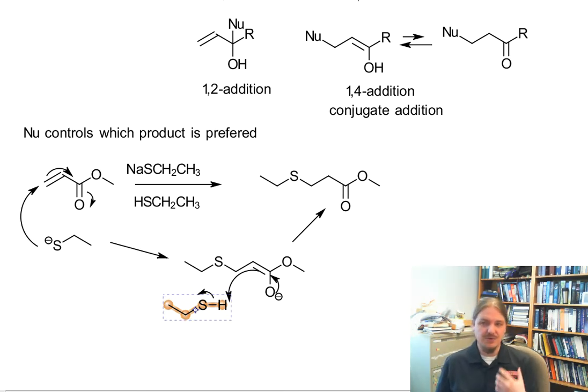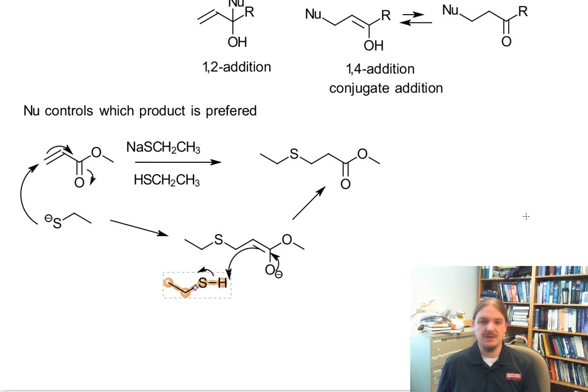So this is the overall Michael or conjugate or 1,4-addition mechanism to unsaturated carbonyl compounds. In the next video, we'll talk about different types of nucleophiles and which ones prefer 1,2-addition and which ones prefer 1,4-addition. Thank you for watching.